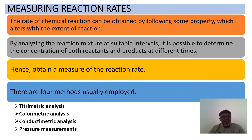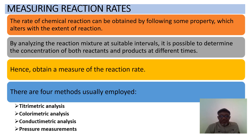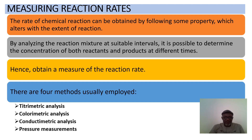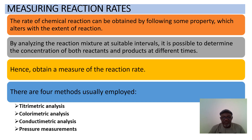To measure reaction rate, we follow properties that change with the extent of reaction. A property such as color — for example, changing from light blue to deep blue — can be monitored using instruments that give proportional readings relative to concentration, allowing us to determine reactant concentration at any point in time.